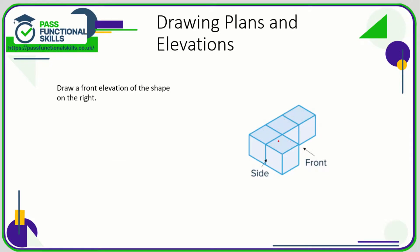So the plan would look like this. Now onto the front elevation, you just got to imagine you're looking at this from the front. We will only see this square, this square, and this square. We won't see the top, the sides, or the back, so we will simply see three squares in a line. The front elevation will look like this.